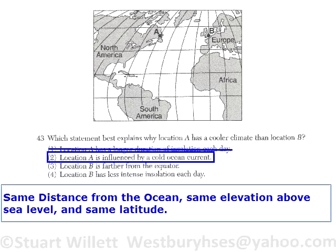Number three: location B is farther from the equator. No — distance from the equator is based on latitude, and both locations have the same latitude. So three cannot be right.